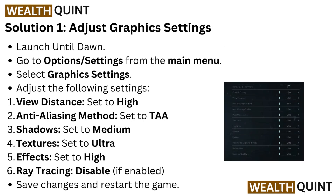Solution 1: Adjust graphics settings. Launch Until Dawn and go to Options or Settings from the main menu. Select Graphics settings and adjust the following settings. View Distance: set to High. Anti-Aliasing Method: set to TAA. Shadow: set to Medium.